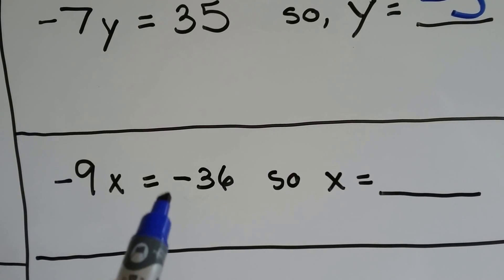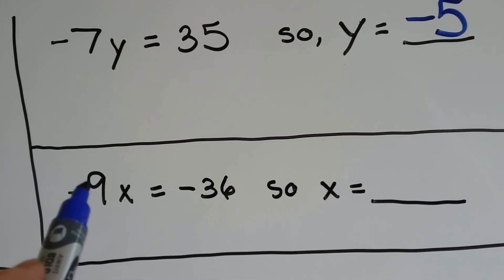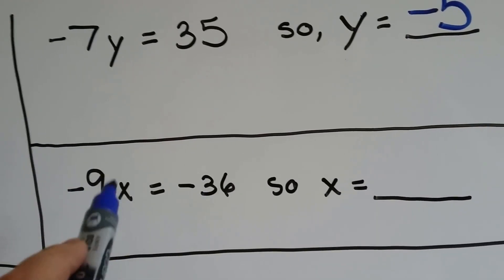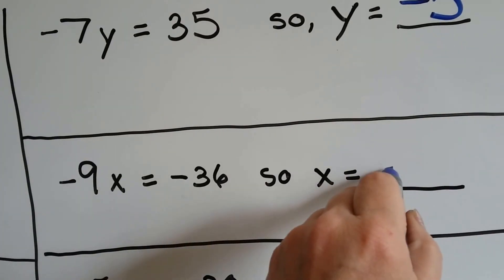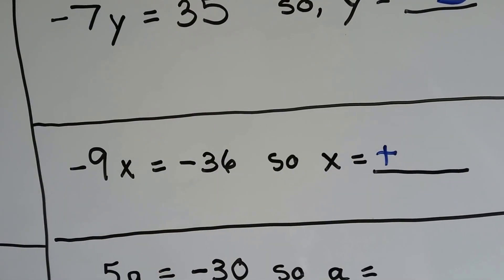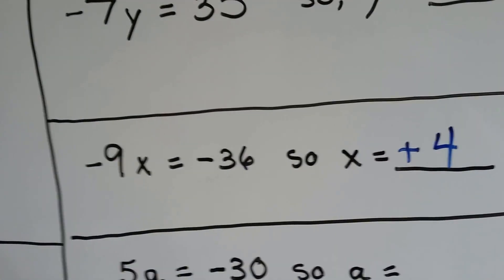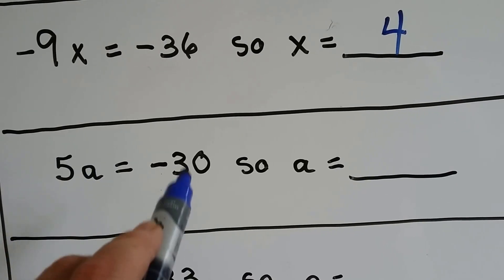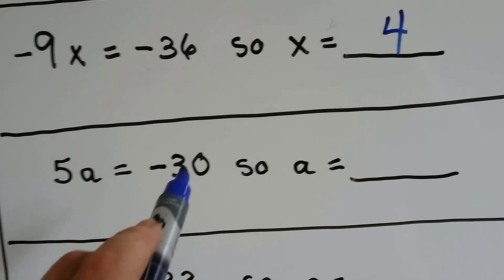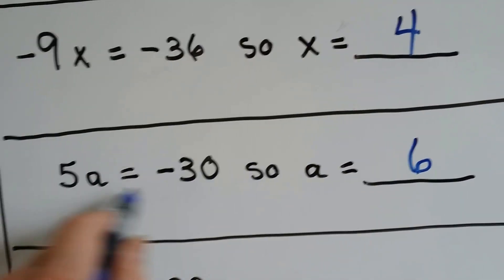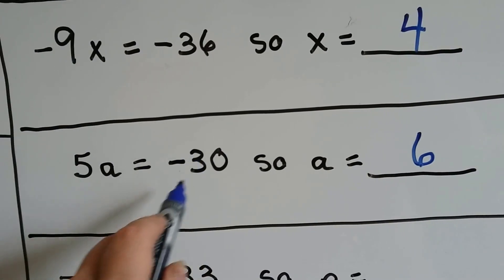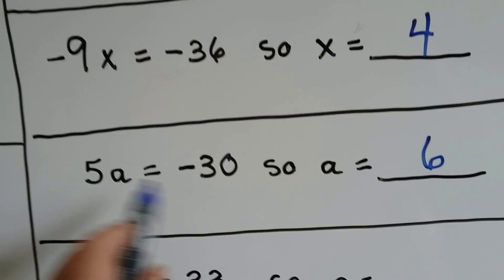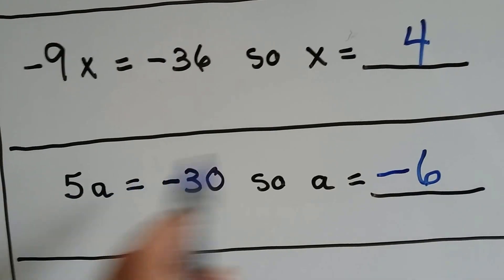Negative 9x equals negative 36. We have a negative times something, but the answer is also negative. So x has to be a positive number. Nine times what is 36? Nine times four — so x equals positive 4, and we don't need to write the positive sign. Next: 5a equals negative 30. Five times what is 30? Five times six. But this is a positive five and the answer is negative, so we need unlike signs. A positive six would give positive 30, so a must be negative six to get negative 30.